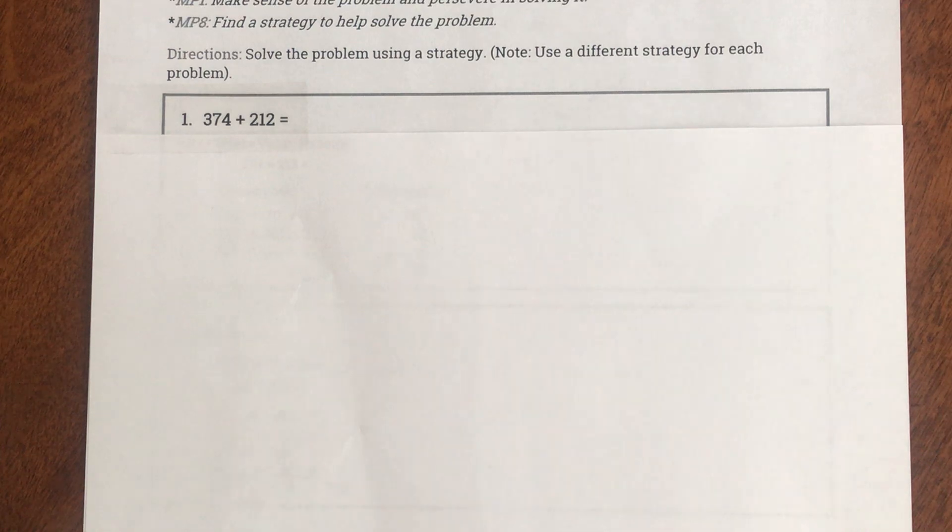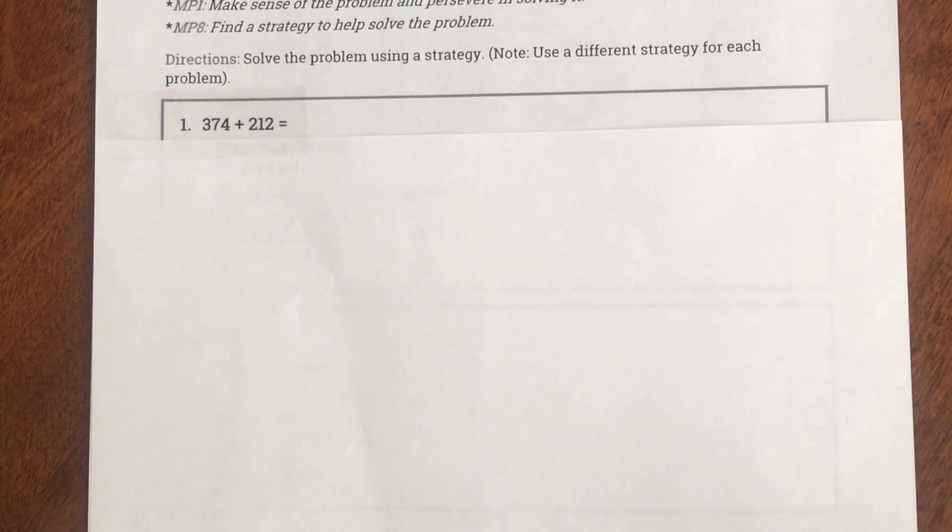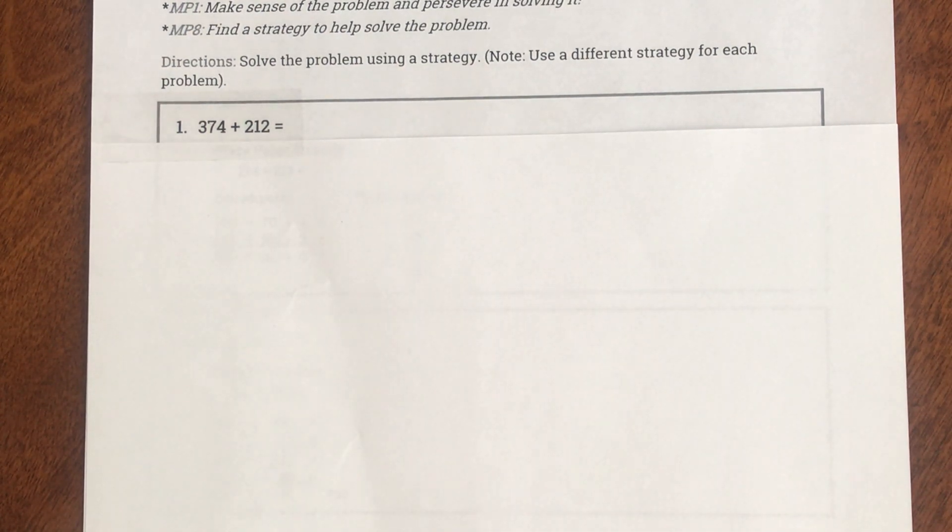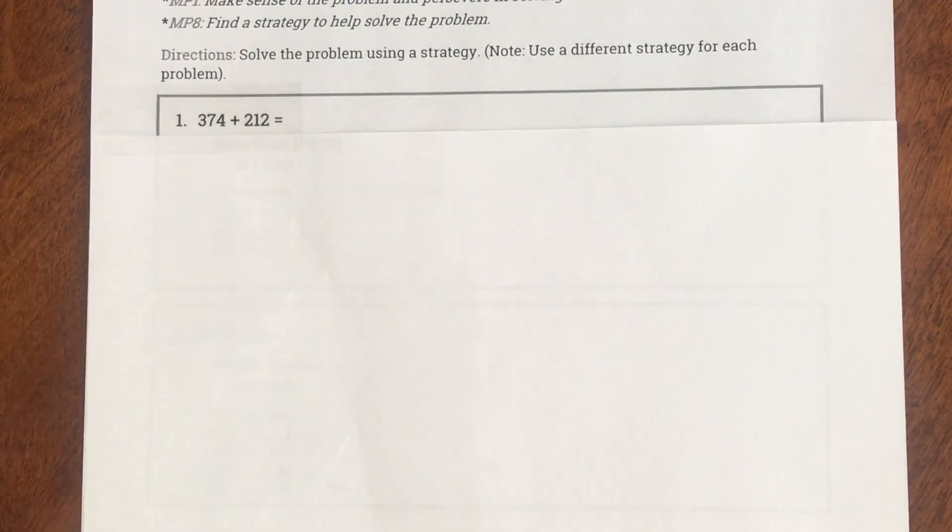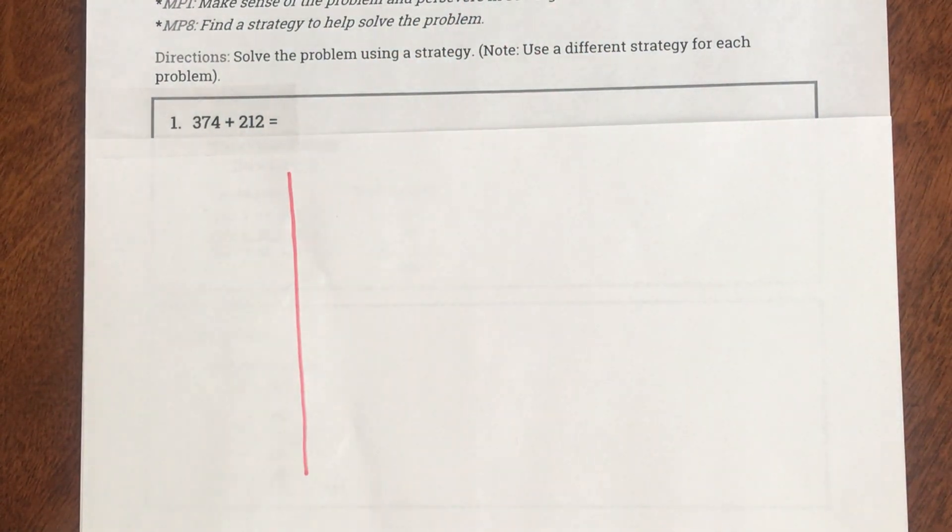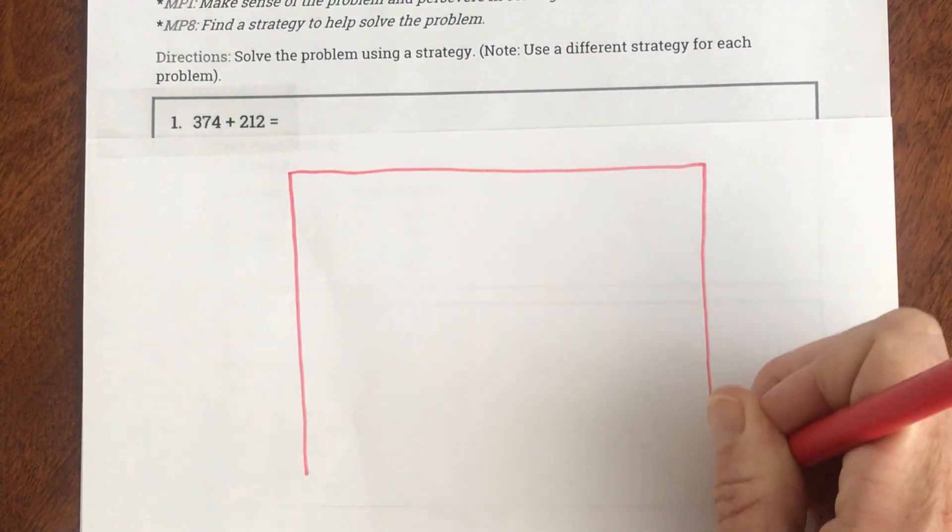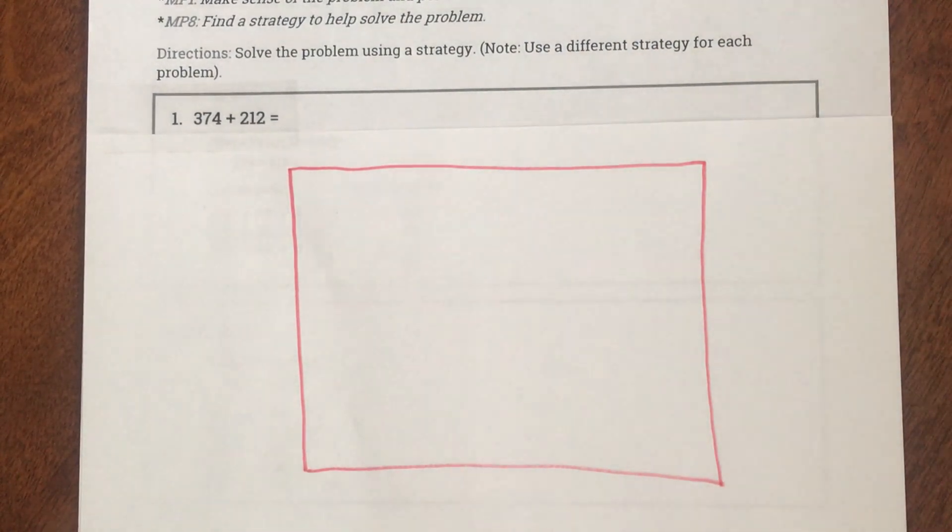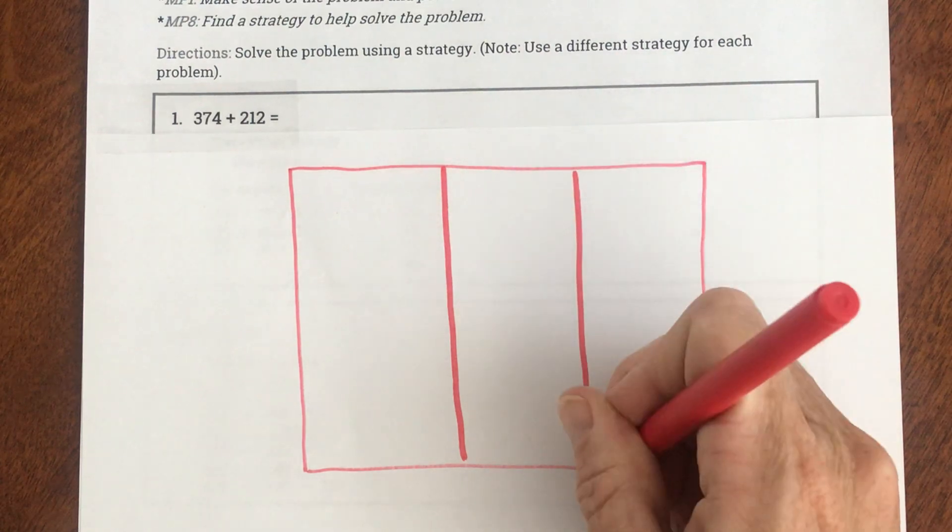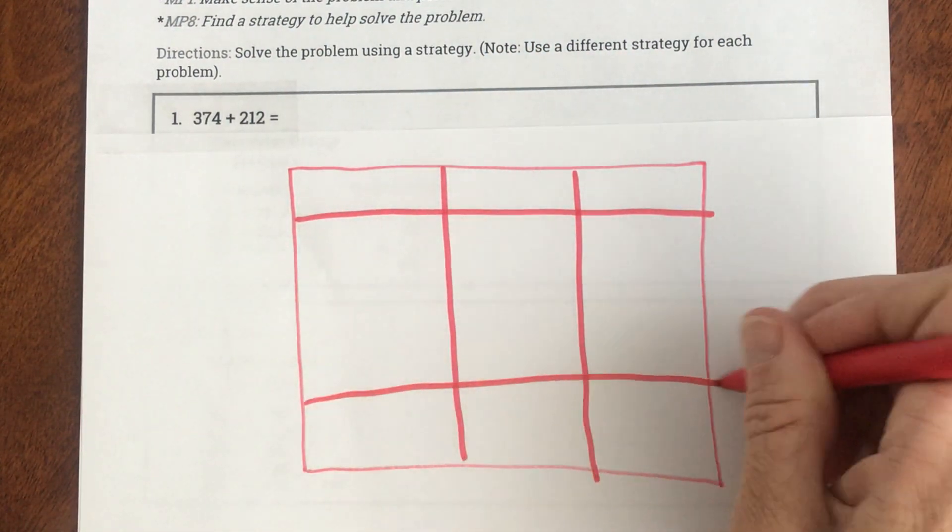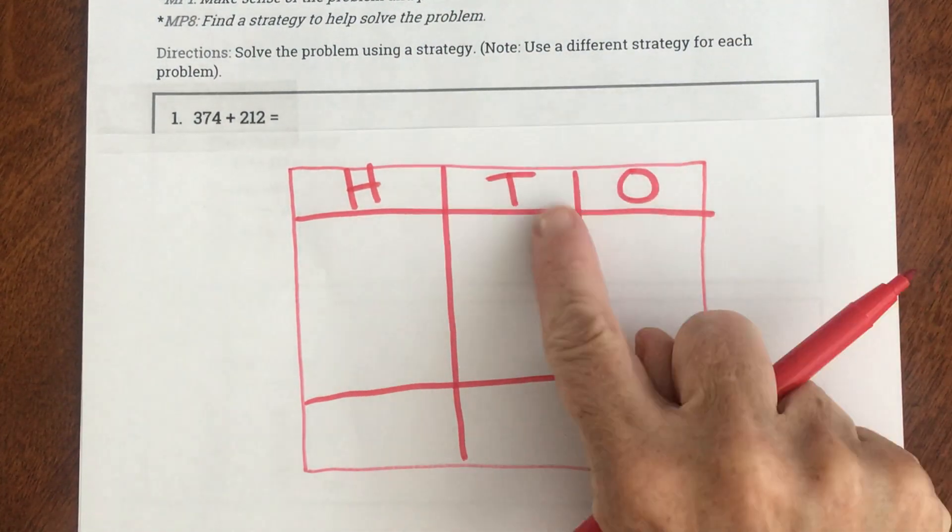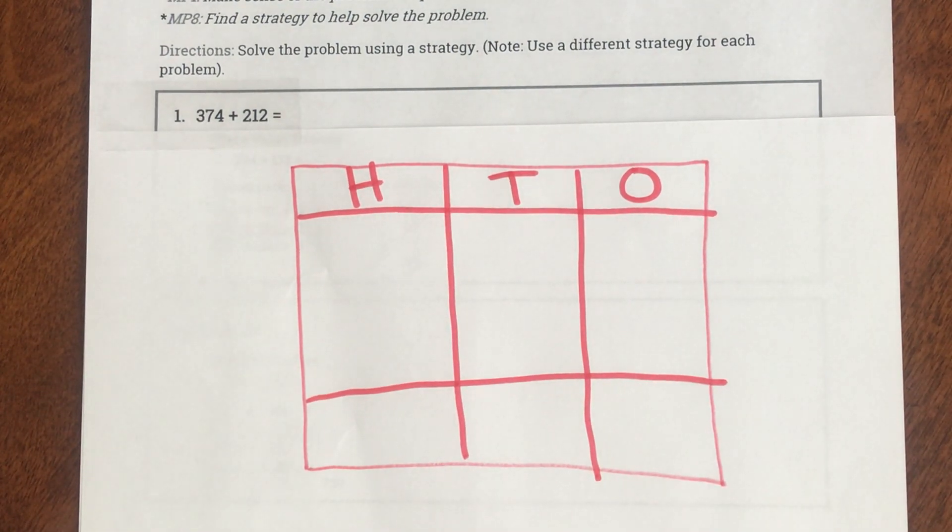So here is my first problem. My first problem says 374 + 212. So my first step says that I need to decompose these addends into ones, tens, and hundreds on a place value map. So here's going to be my place value map. Now you'll notice, ladies and gentlemen, I'm writing in red, which means you are not writing with me. I'm writing all by myself when I write in red. So I'm going to make a place value chart before I get started. And this is my ones, tens, and hundreds.